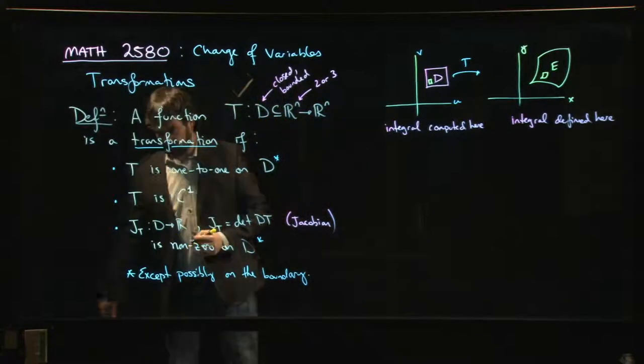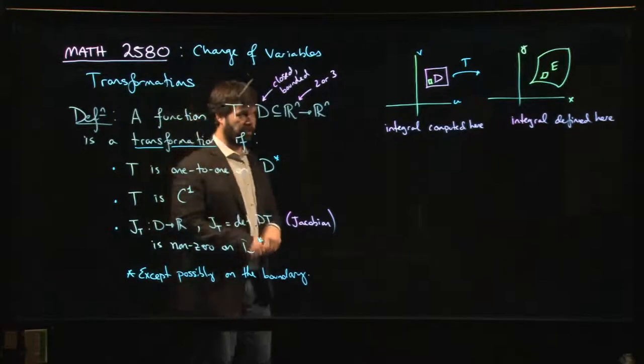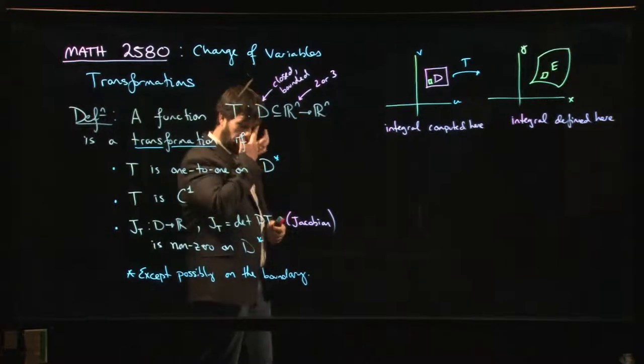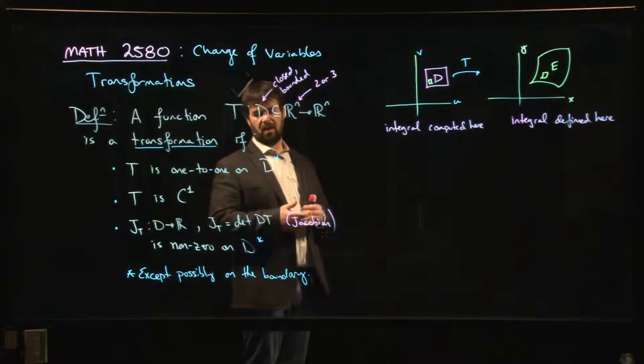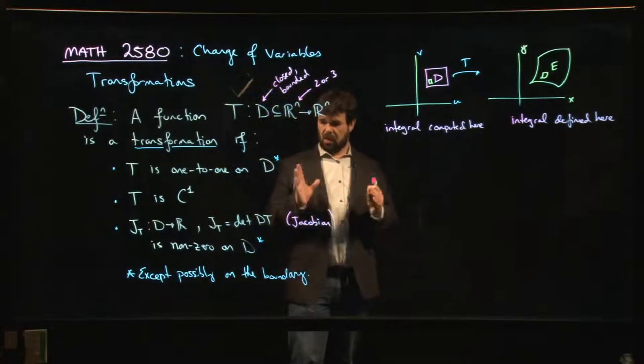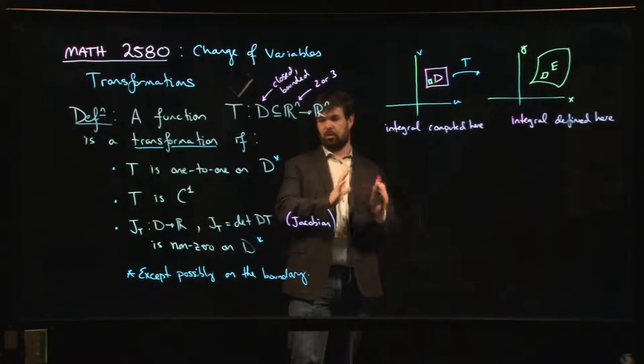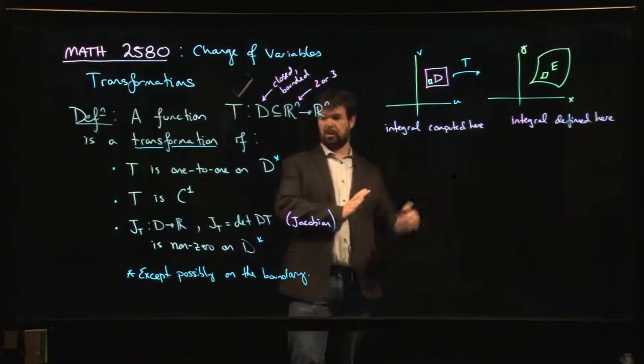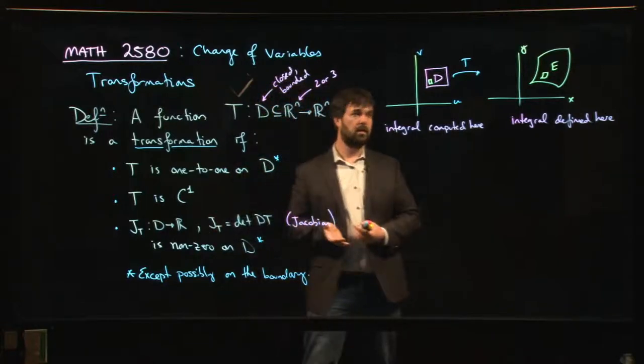And how much does that change in area depend on where in the rectangle I happen to be? I need that change in area to be given as a function of u and v. And you might guess, because we've kind of seen this now in the context of polar and spherical coordinates, that the thing that computes this change of area is exactly this Jacobian, it's this determinant. And we already know for linear functions, we know for linear transformations, matrix multiplication, that if you want to know how much the area of a rectangle is changed when you apply a matrix, transform that rectangle into a parallelogram, you want to know the area of the parallelogram, well, you calculate the determinant of the matrix that you use to transform it. That's the general idea.